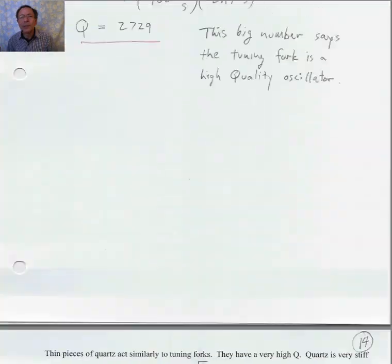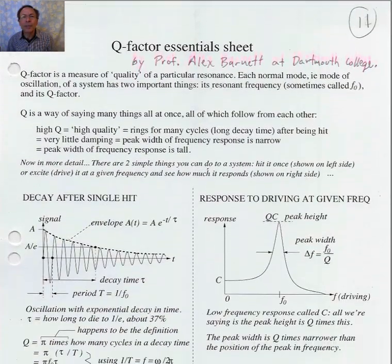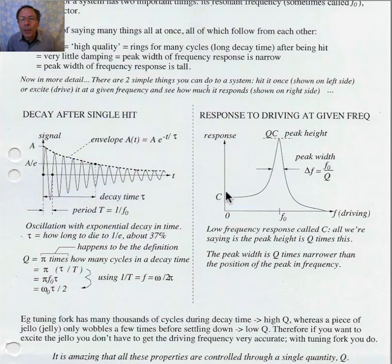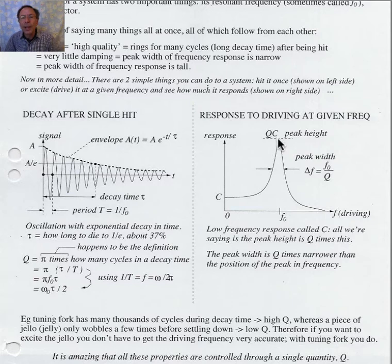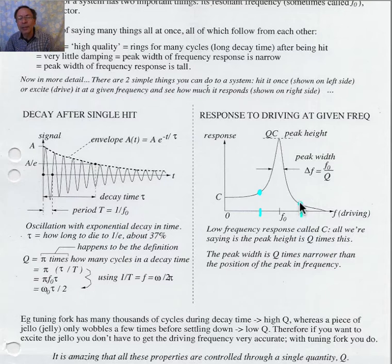Going back to the reference sheet: this graph tells you that if you have an oscillator and you drive it at its natural frequency f₀, then the amplitude of oscillation is going to be big. On the other hand, if you drive it at too low a frequency, the amplitude will be much less. Similarly, if you drive it at too high a frequency, the amplitude will also be much less.